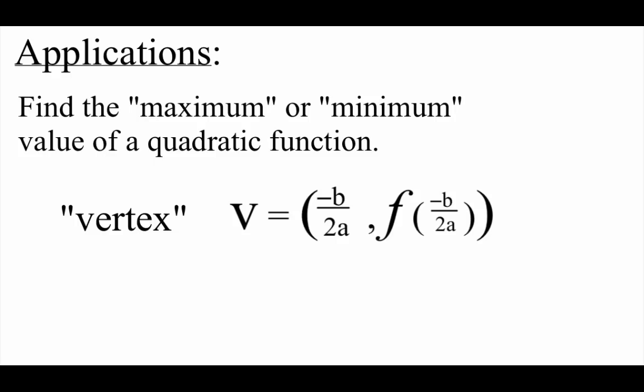The last thing we're doing is a couple of application problems where we have to find a maximum or minimum value based on a quadratic function. Those maximum or minimum values happen at the vertex of our graph. If we have a quadratic not in standard form, here's a shortcut: to find the x value of the vertex, we use negative b over 2a. Then to find the y value, we plug that x back into our function — so we don't have to complete the square every time.